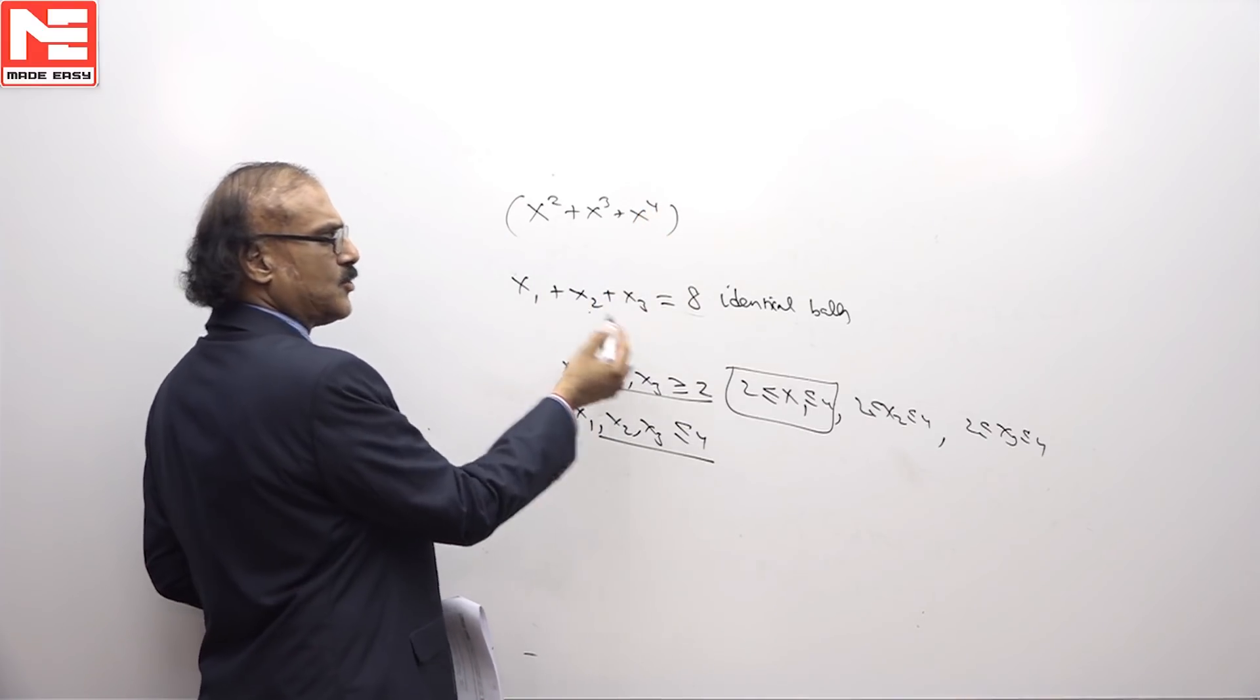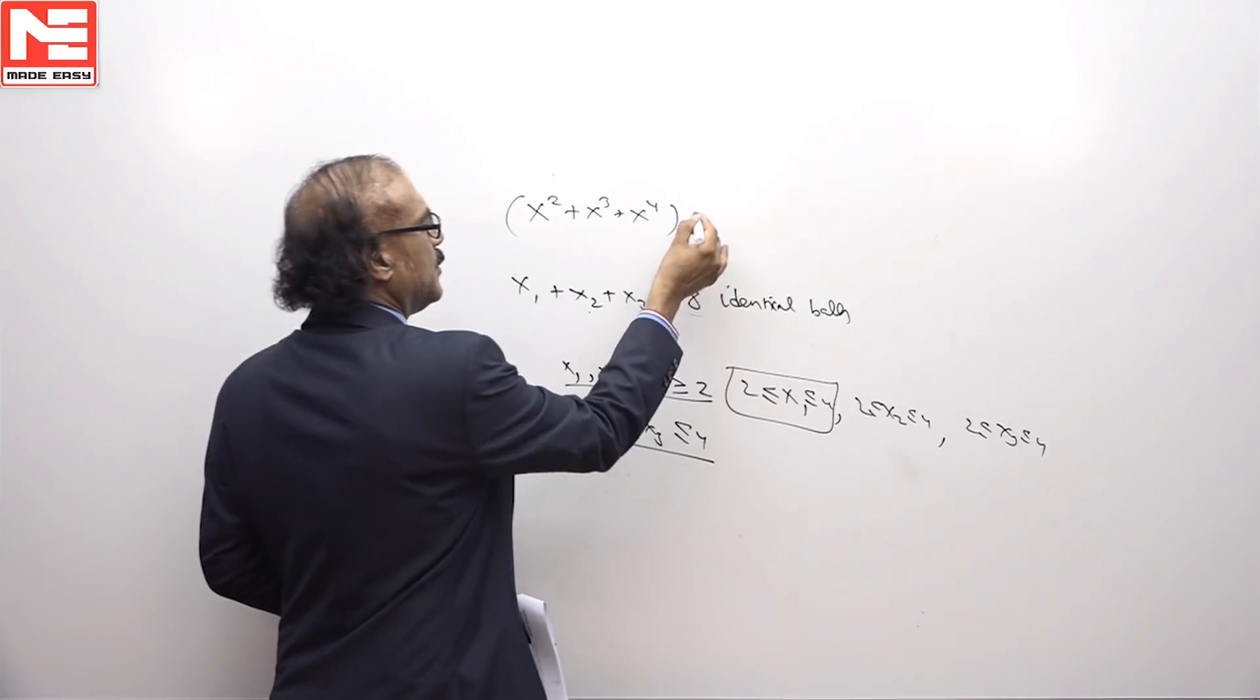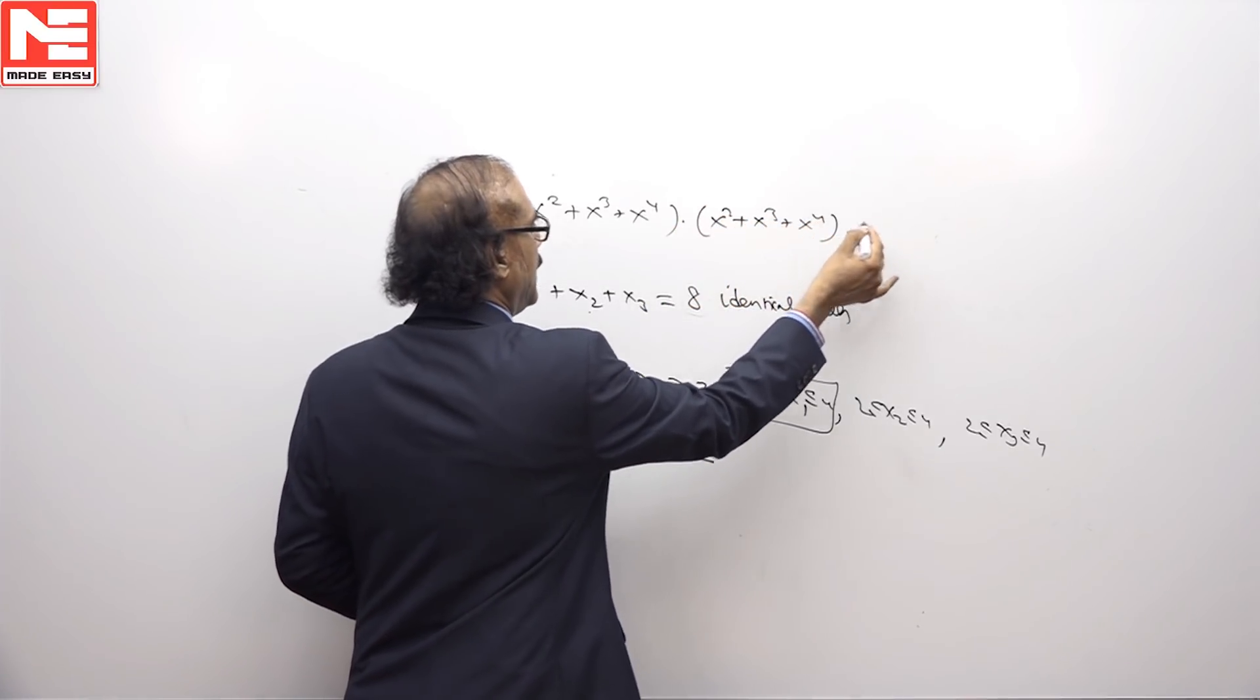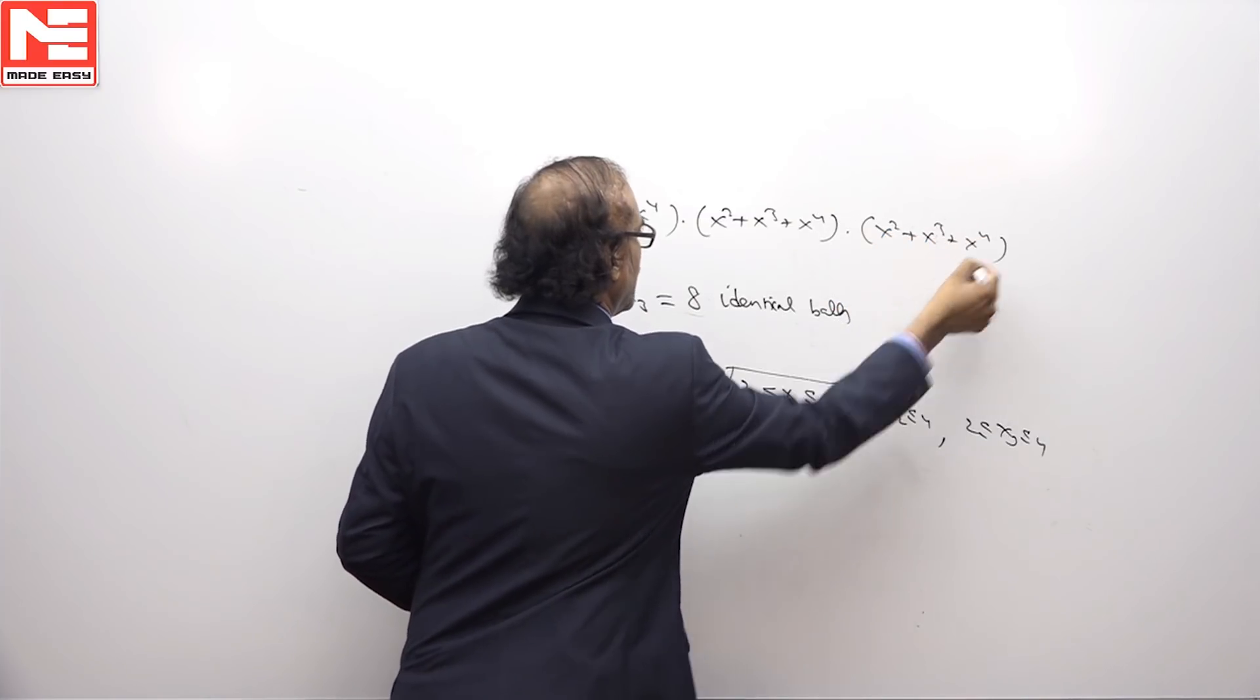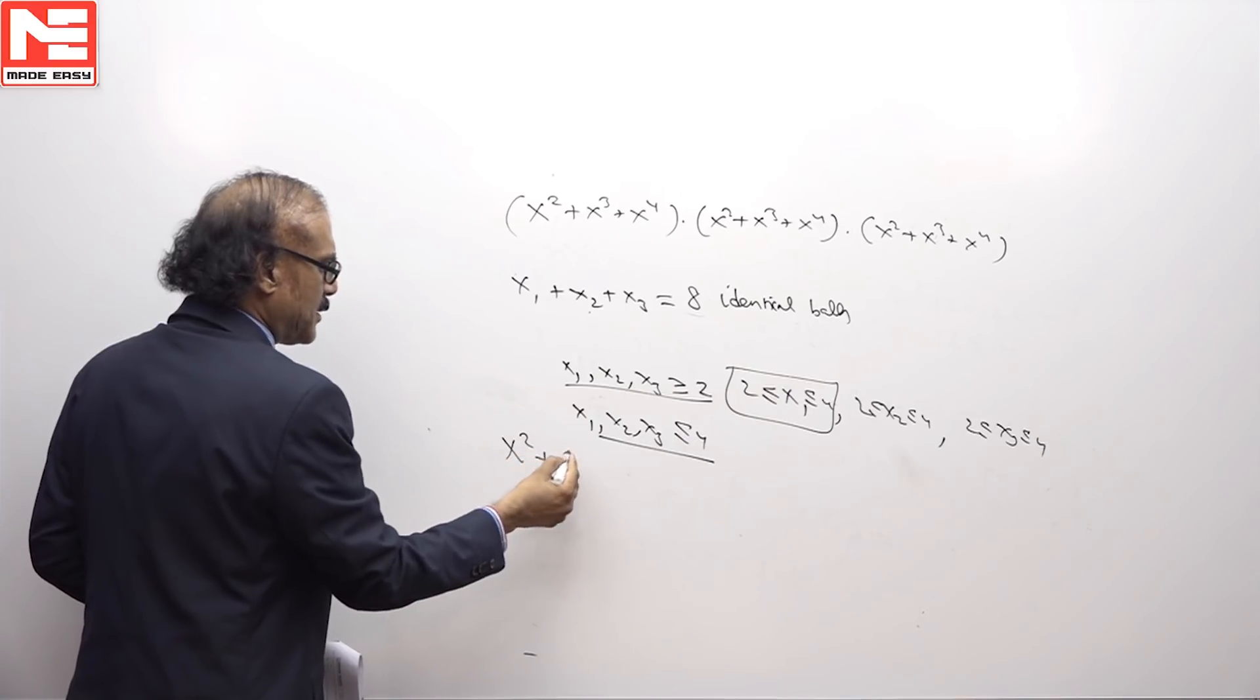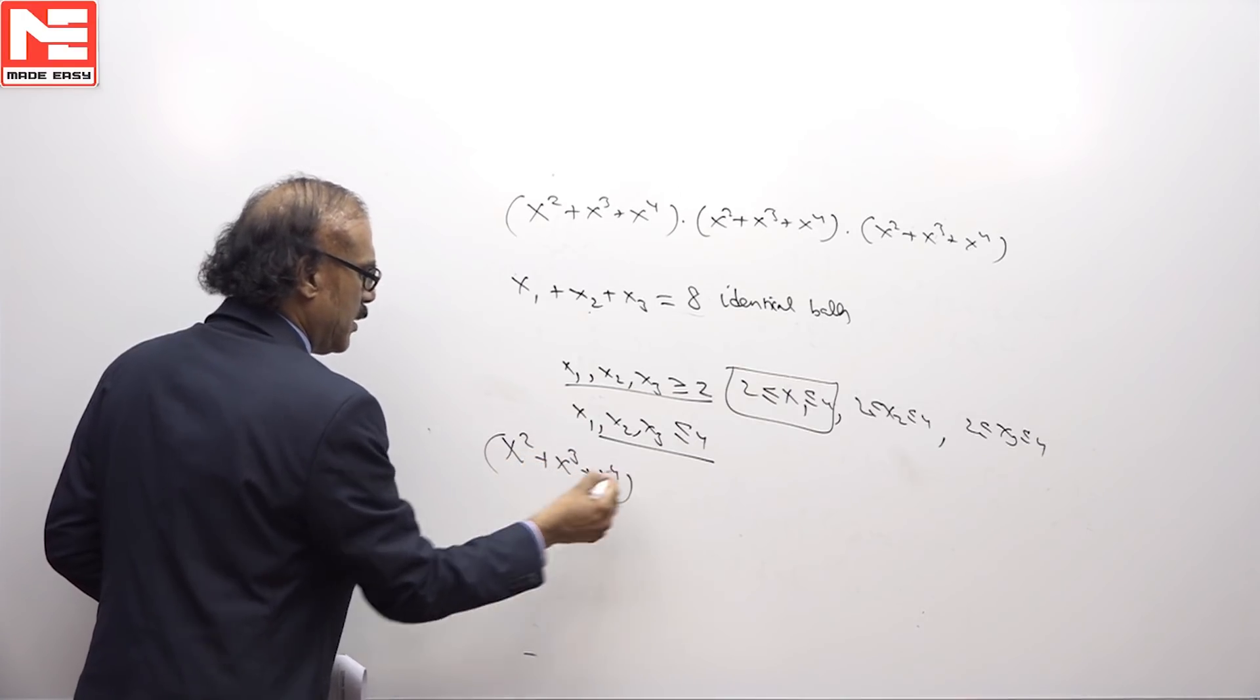Generating function for x2 is also same because all the conditions are same, so it is also x square and the third one also is same. So generating function for this problem is x square plus x cube plus x to the 4 whole cube.